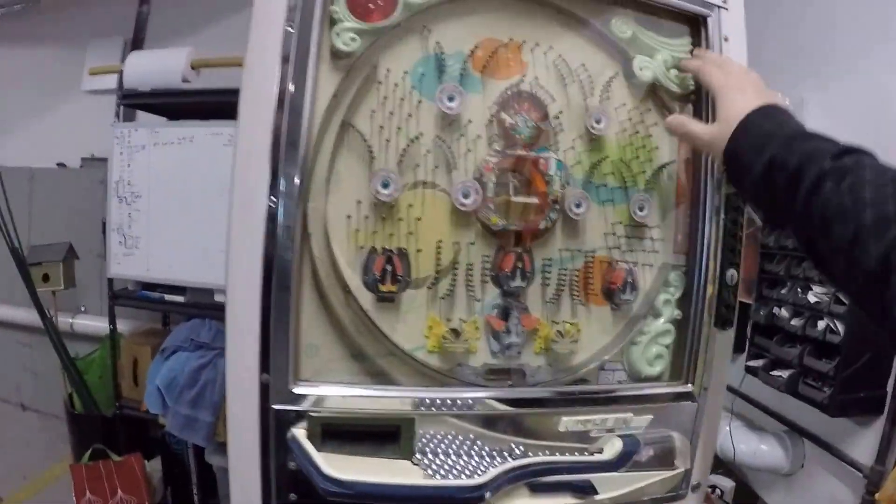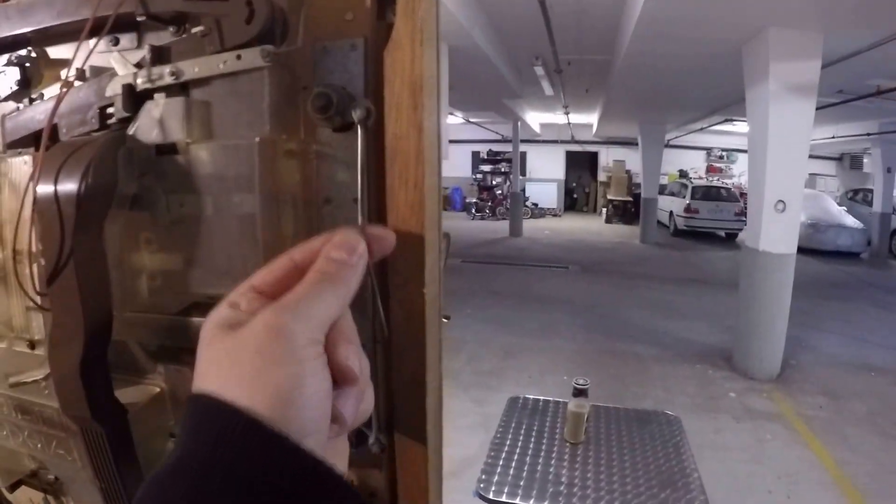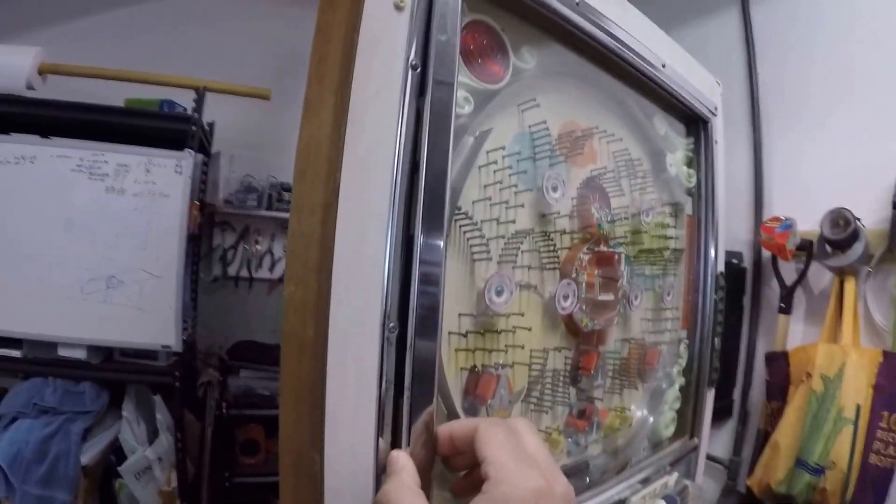To open the window in case balls get stuck, there's a little mechanism here in the back. Basically, you just hold it like this and you spin it, flip it up, and it releases the window.